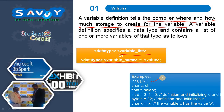Here, int i, j, k — we defined three variables of type integer. Second, char c, ch — c and ch are two variables of type character. f and salary are two variables of type float. d = 3 and f = 5 — we are defining and also initializing the values. Similarly, byte and character work the same way.